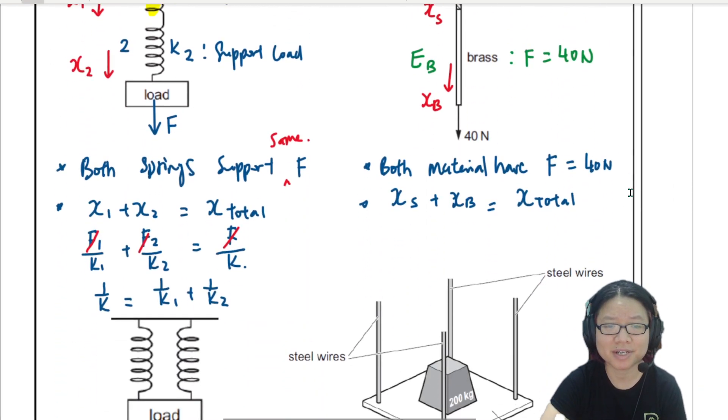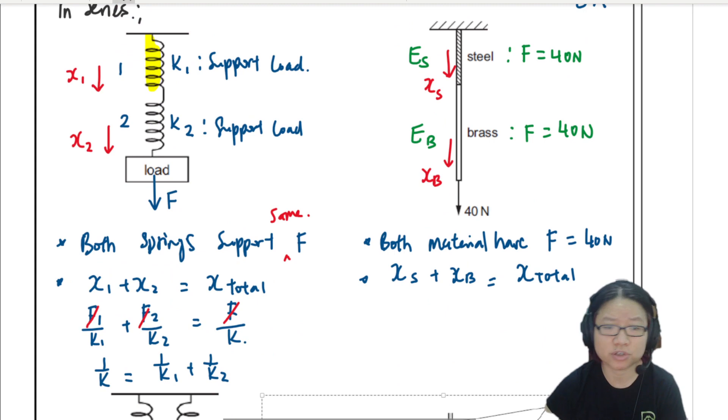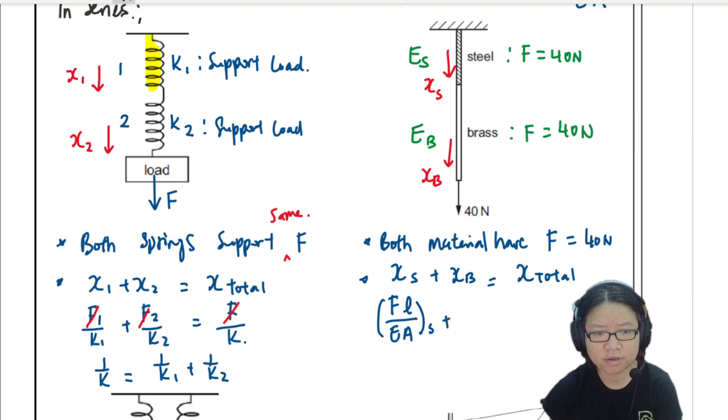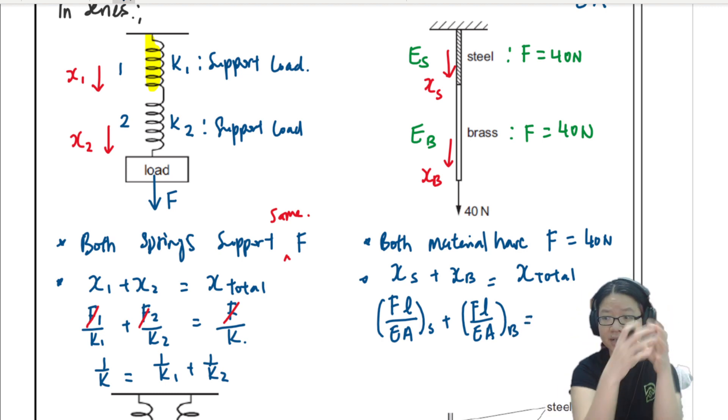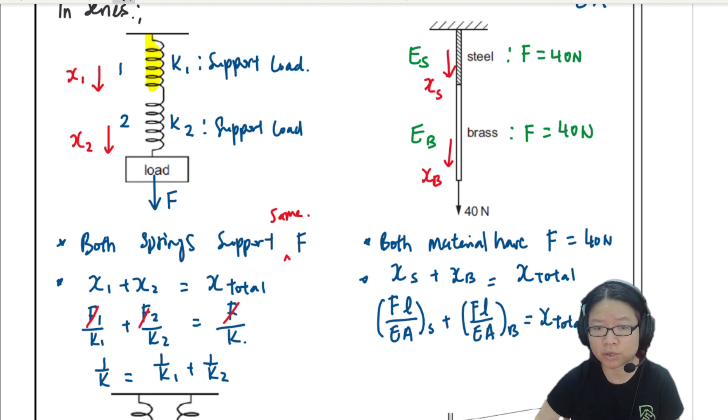So you can just put this one inside here. I'm just going to write this here for completion's sake. You can put FL over EA for steel, plus FL over young modulus cross-sectional area for brass. Yes, I can have a very thick steel bar and a slightly thinner brass bar. You don't have to have the same area. But the idea is still the same.